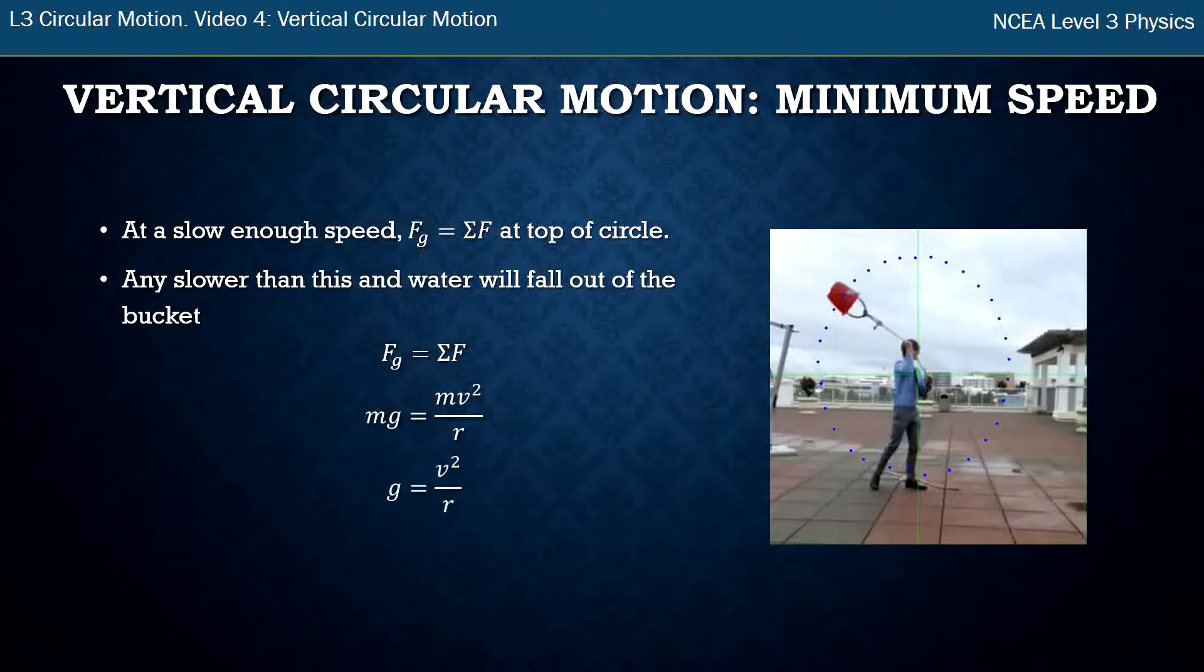There's a mass on both sides so they cancel out and you get g equals v² over r. Then you can rearrange that to find v. What is this minimum speed where any slower than that the water would fall out? So the minimum speed is square root rg. That's something that occasionally once every two years once every three years you will need to be able to do in your end of year exam.